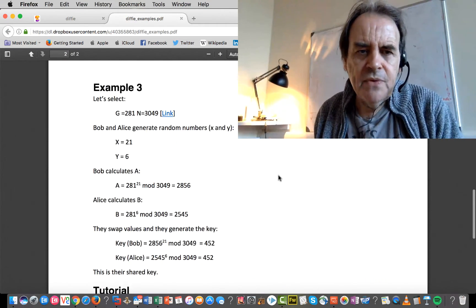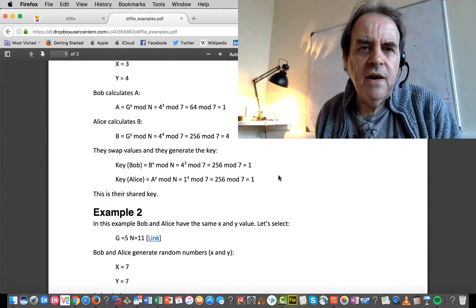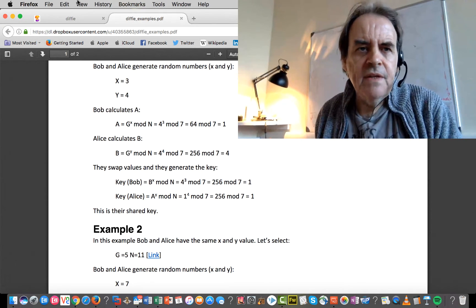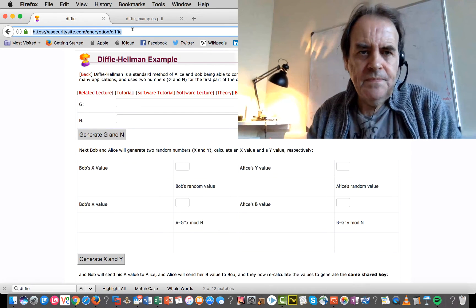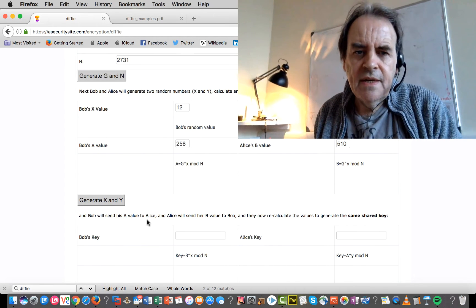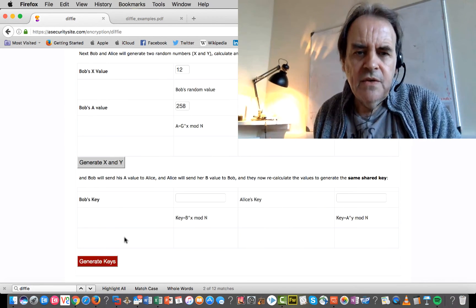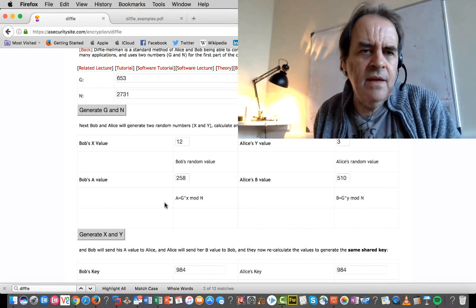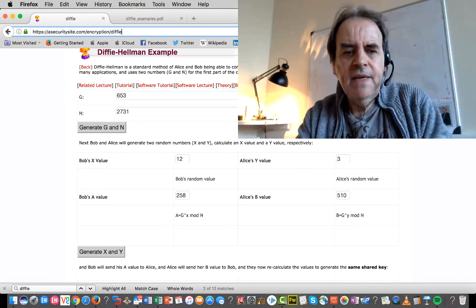Okay, so this shows some examples here of our calculation that we have. We can generate some values here, and hopefully we should end up always with the same key.